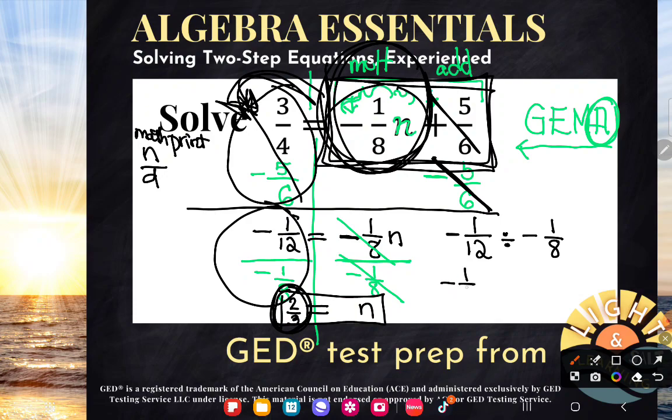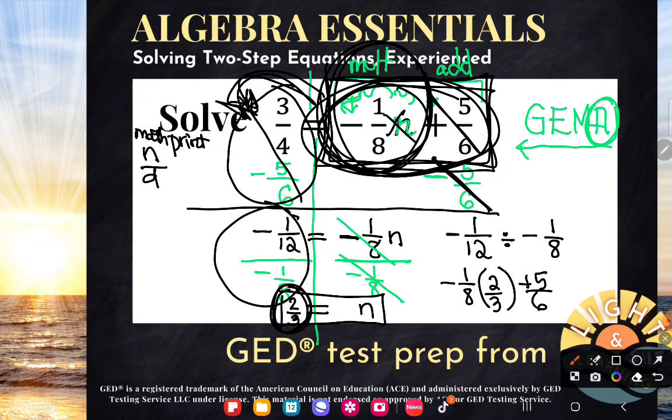Let's see if I take negative 1/8 of this answer, 2/3, and add 5/6 to it. Again, I'm just copying this right-hand side, guys, changing n into my possible solution. Let's see if it does give me 3/4.